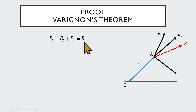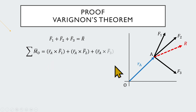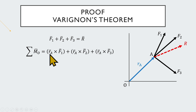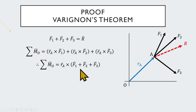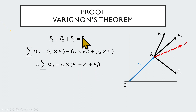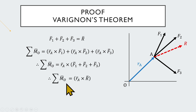Now let's find the sum of moments of all three forces about point O. That is r̄ cross f1̄ plus r̄ cross f2̄ plus r̄ cross f3̄. Therefore we can write the sum of moments about point O as r̄ cross (f1̄ plus f2̄ plus f3̄). But f1̄ plus f2̄ plus f3̄ is nothing but the resultant of the three forces.